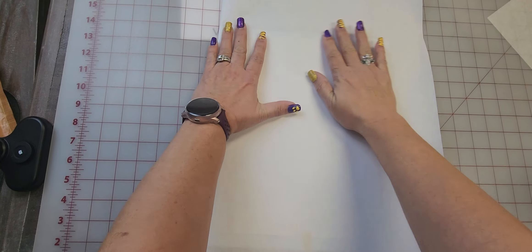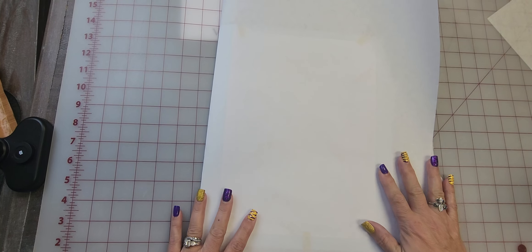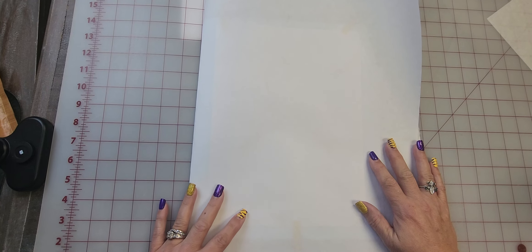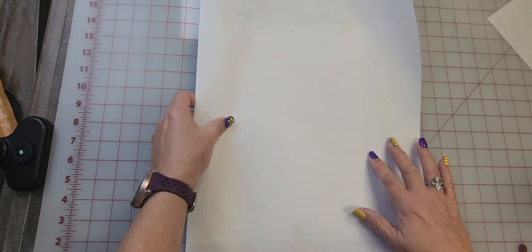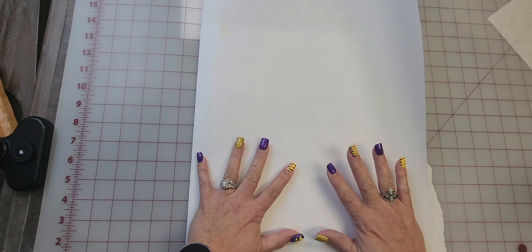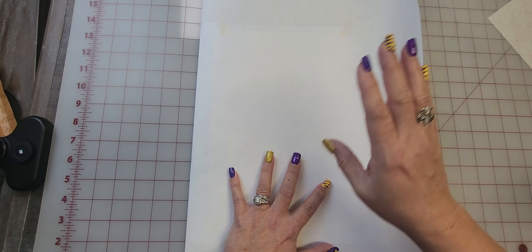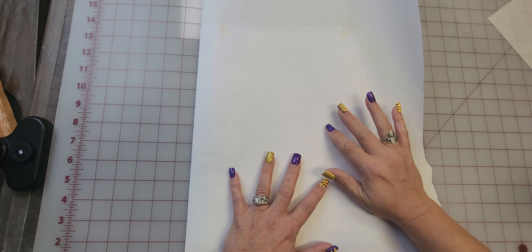And then we are going to press it at 385 for 60 seconds. The key to this is after you press it, you pull it off and you leave it until it gets completely cold.